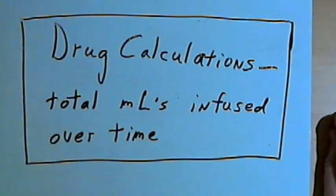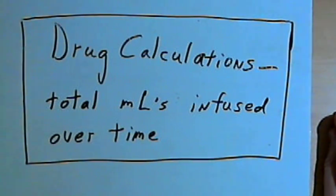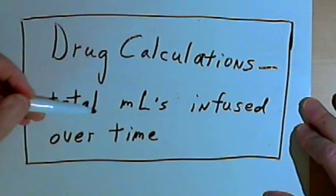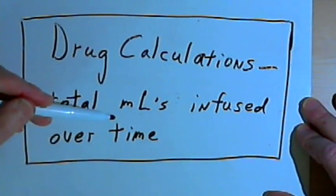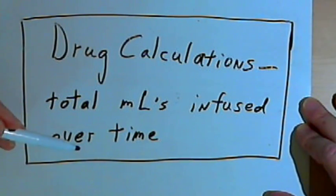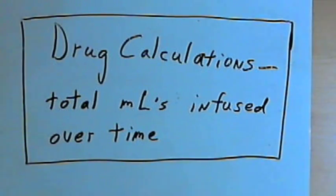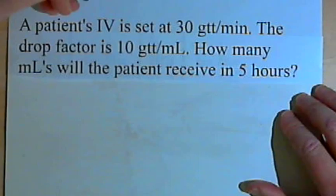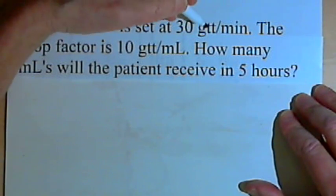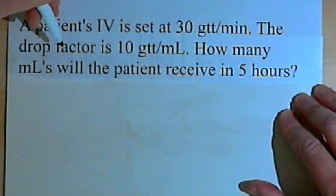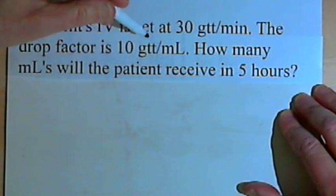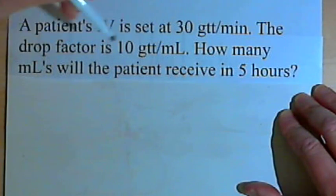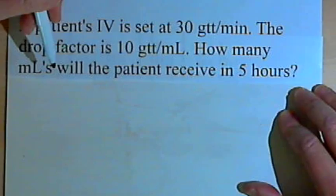This video is provided as supplementary material for courses taught at Howard Community College. In this video I want to show how to calculate the total number of milliliters that will be infused over a given period of time. Here's the first problem: a patient's IV is set at 30 drops per minute, the drop factor is 10 drops per milliliter. How many milliliters will the patient receive in five hours?